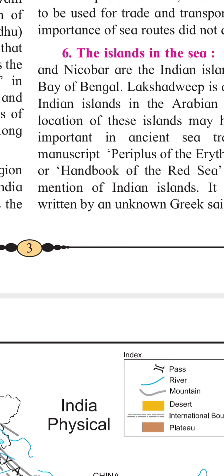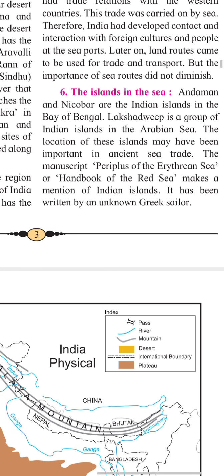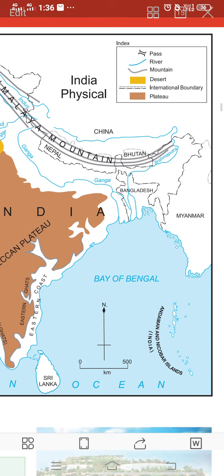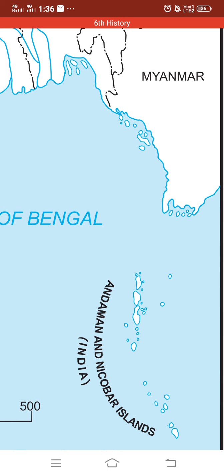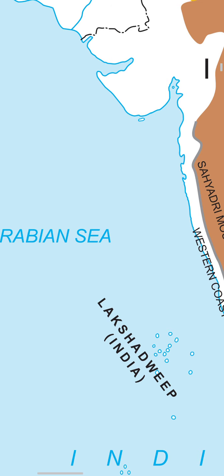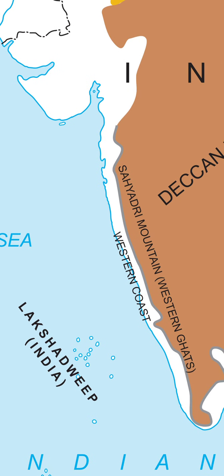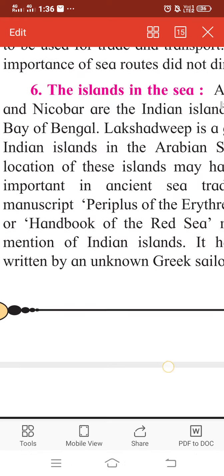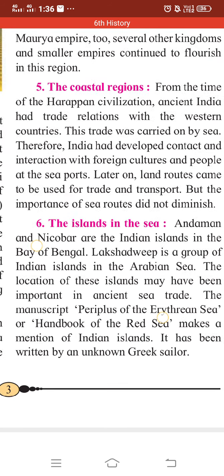The next topic is island groups in the sea. India has mainly two island groups in the ocean. The first is the Andaman and Nicobar Islands, located in the Bay of Bengal, which are part of our country. The second is the Lakshadweep Islands, a group of islands located in the Arabian Sea, also part of India.